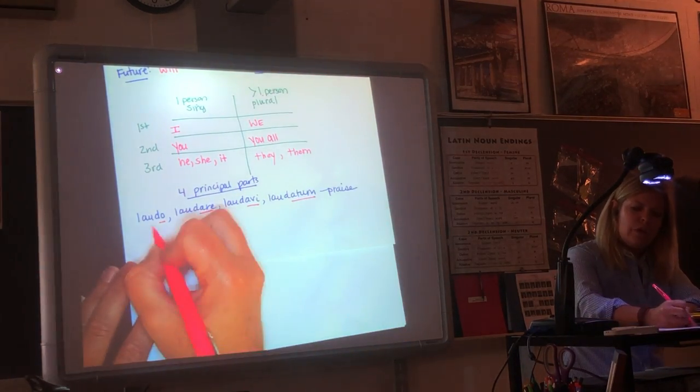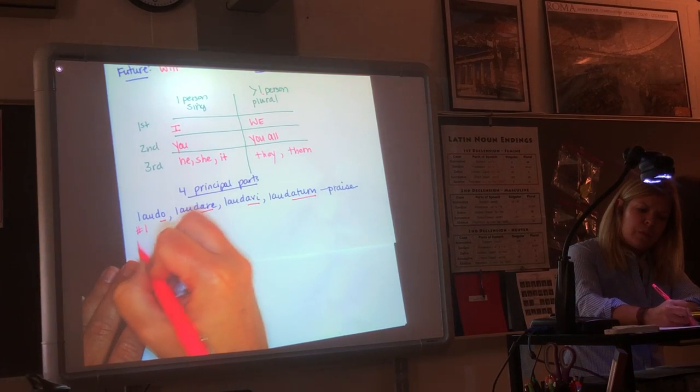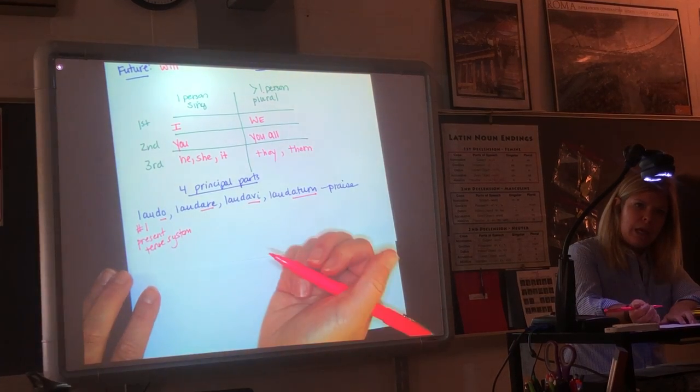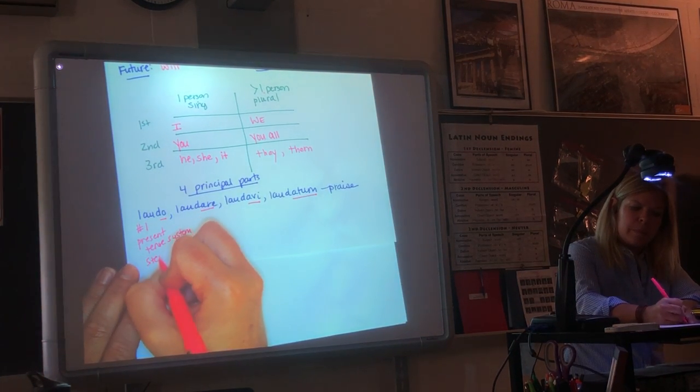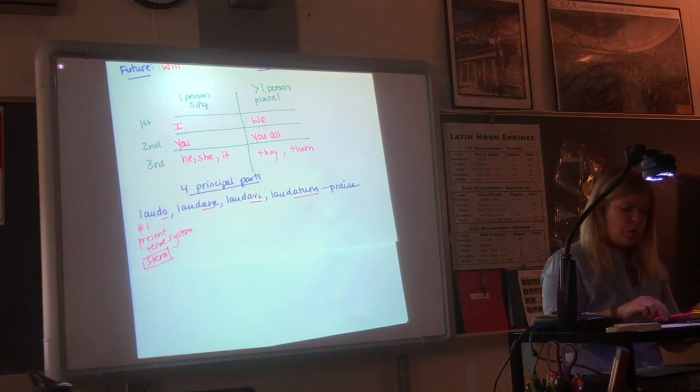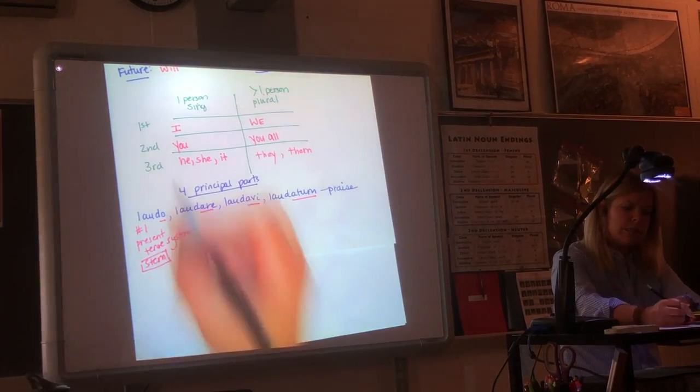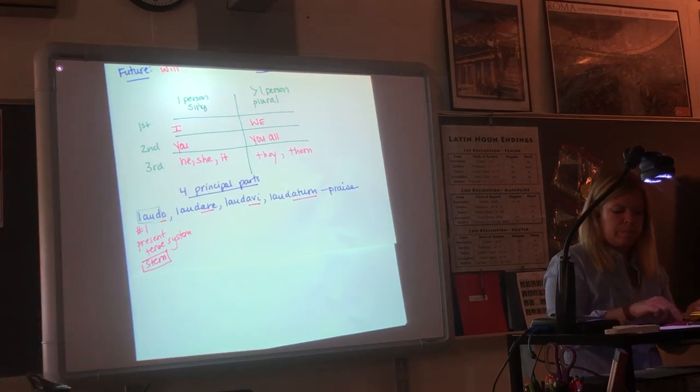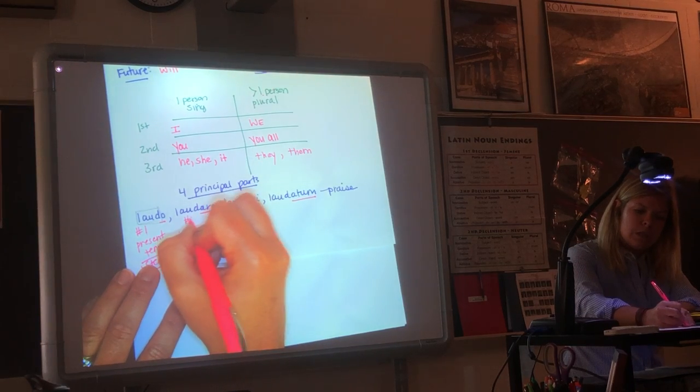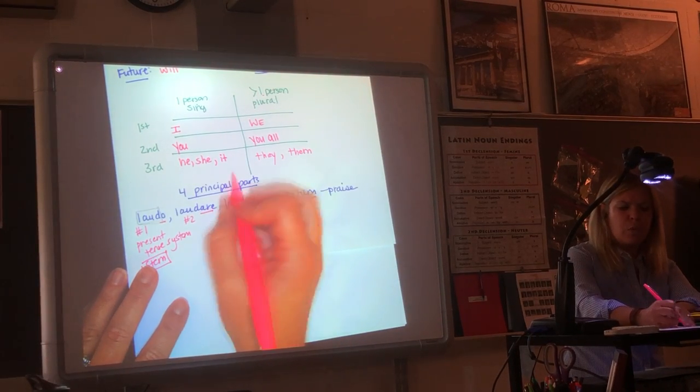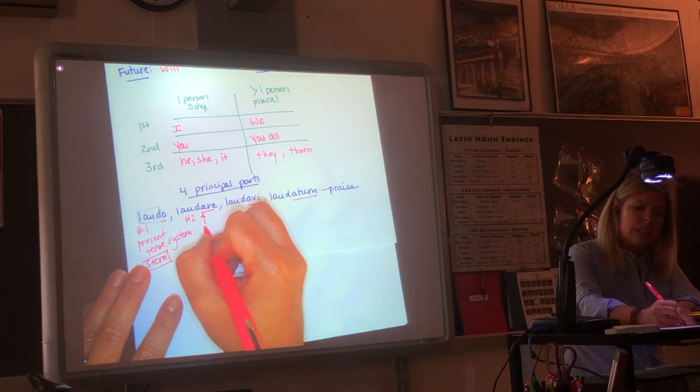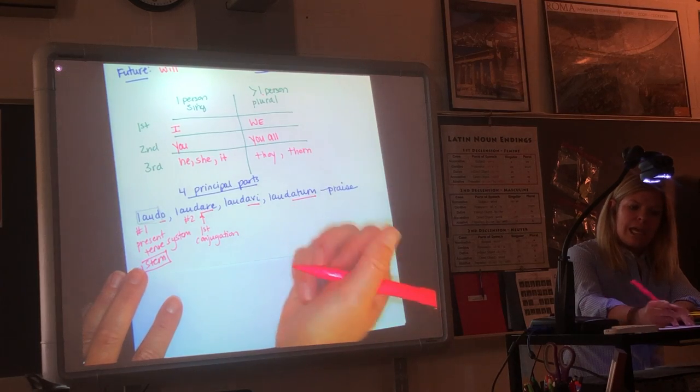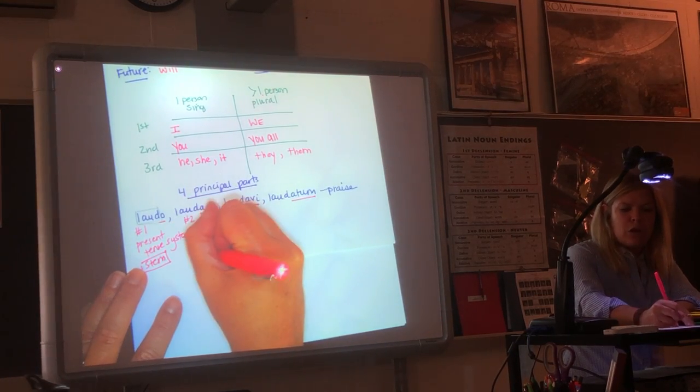They always have this -o, -are, -avi, -atum. The first principal part is used for the present tense system. That's how you find the stem. Everything before the -o would be your stem for the present tense system, laud-, is your present tense system stem. The second principal part, up to this point, hasn't been super important, but the fact that that is an -are tells us it's first conjugation, and you're going to have A before your ending.